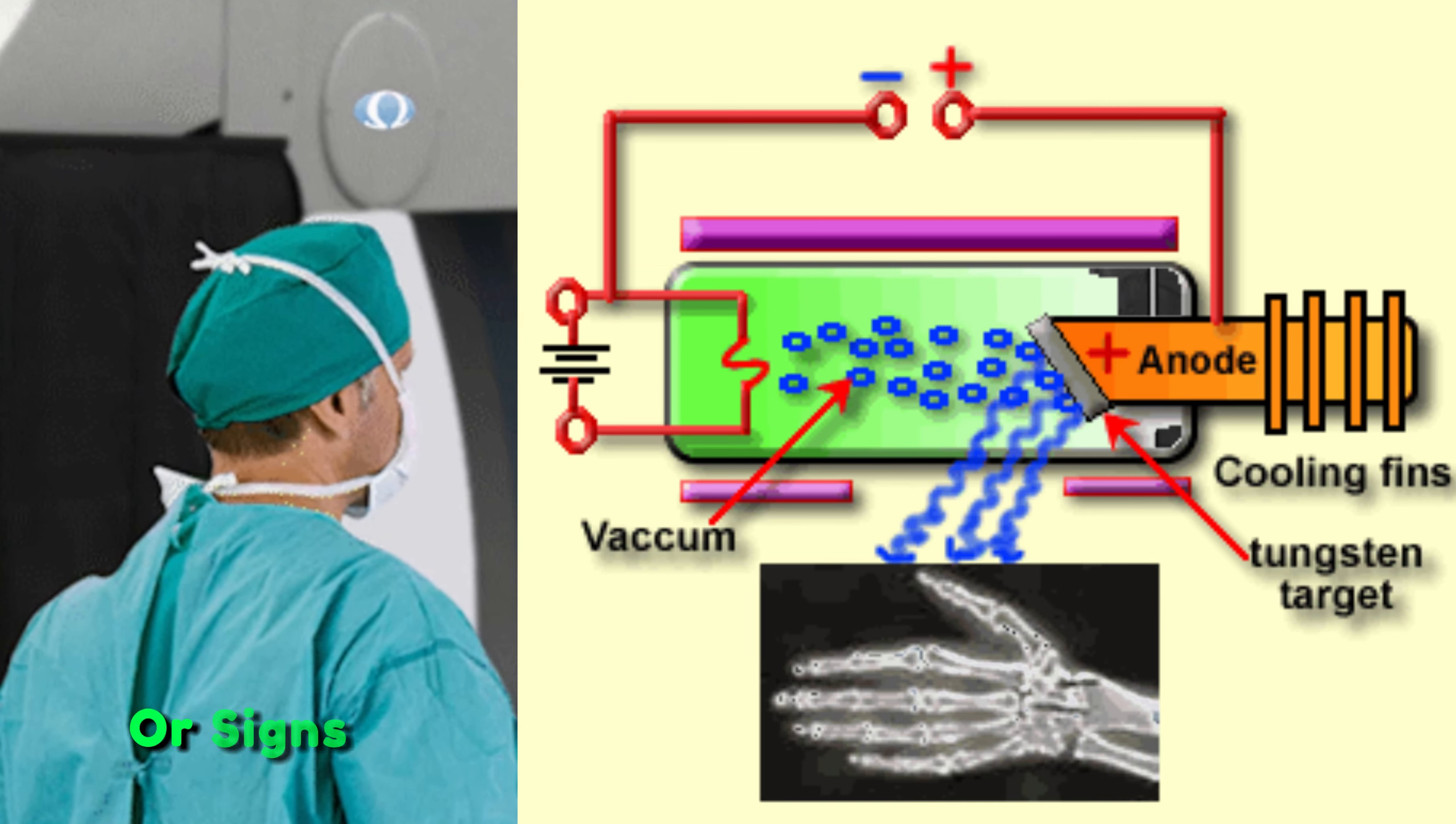Mechanical components. Inspect mechanical components such as the x-ray table, tube stand, and positioning devices for any malfunctions or irregularities. Lubricate moving parts and address any mechanical issues promptly.